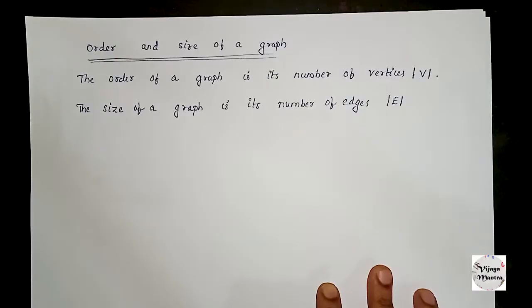The number of edges in a graph is the size of the graph. Order is the number of vertices; number of edges is the size.